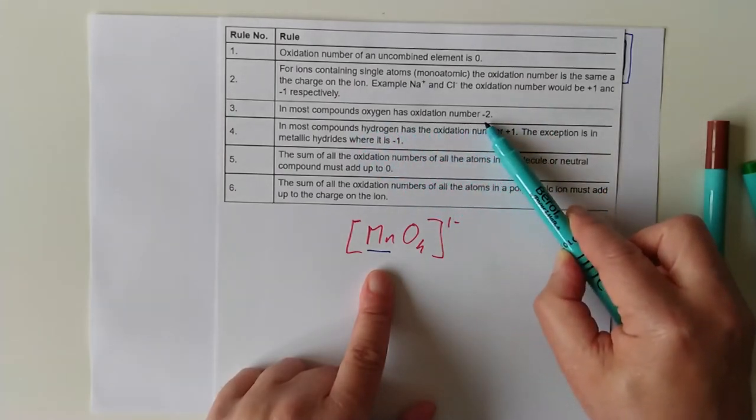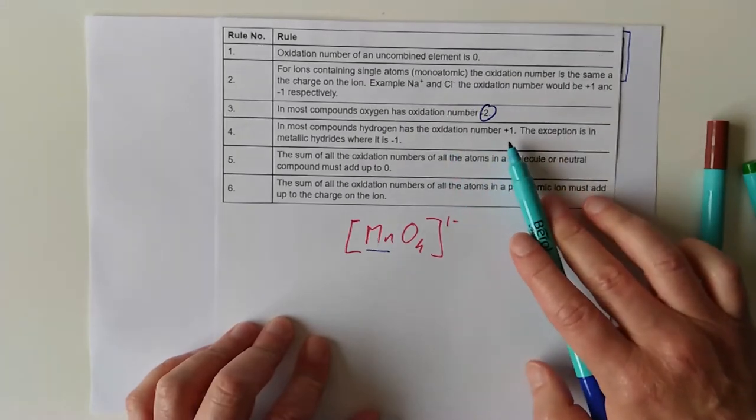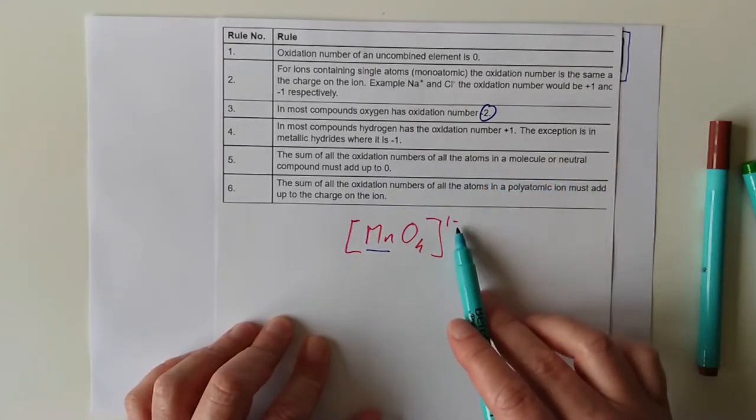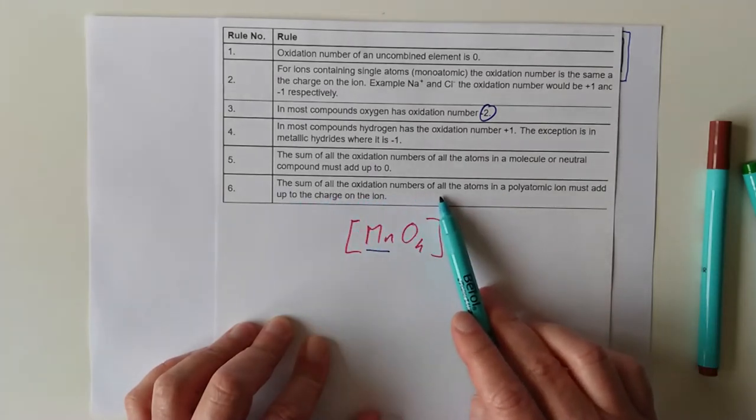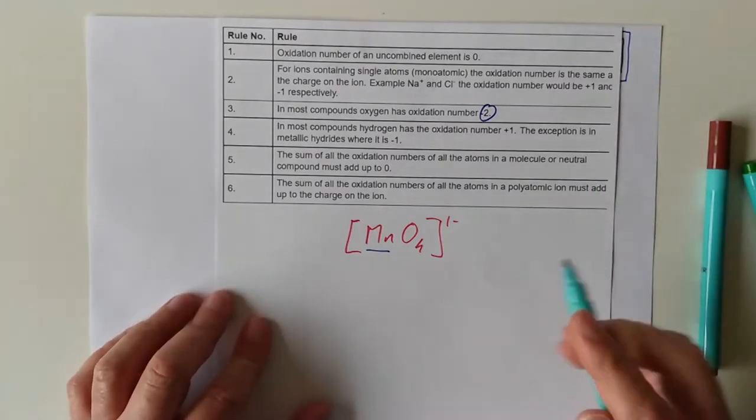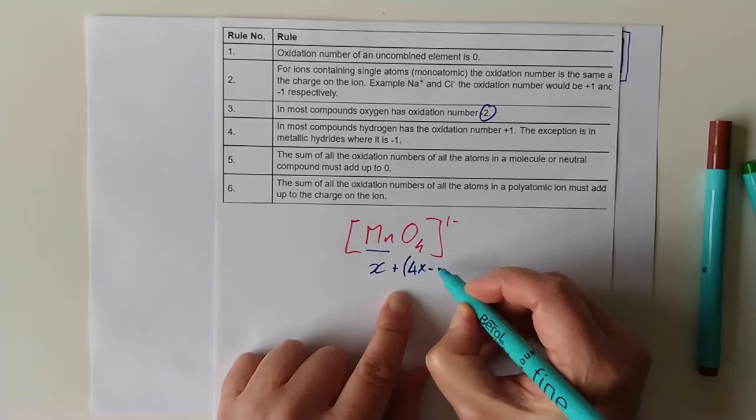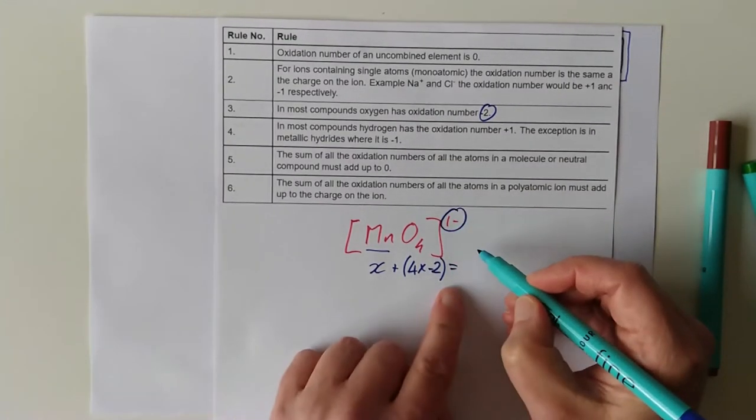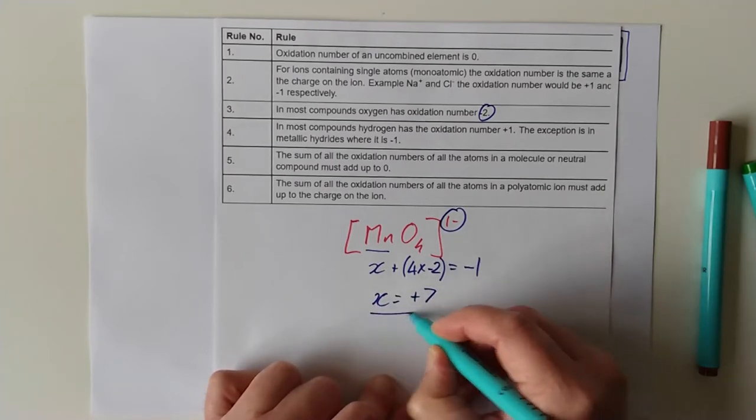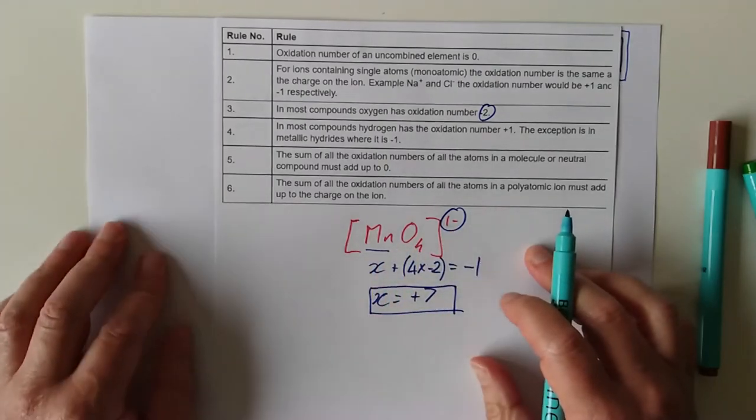In most compounds, the oxidation number of oxygen is -2. I'm seeing four -2s here. Brilliant. The sum of all the oxidation numbers in a polyatomic ion must add up to the charge on the ion. Now, that is a long-winded way of saying that whatever the oxidation number of this is, we'll call it x. If you add it to the combined oxidation number of these four oxygens, so that's four lots, -2, that sum must be equal to the charge on the ion, which is -1. So solve for x, and you get x equals seven. So that is the oxidation number of manganese in this permanganate or MnO4 1- ion. That's how you do these, guys.